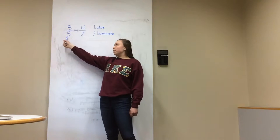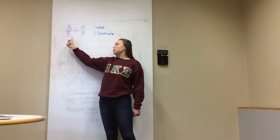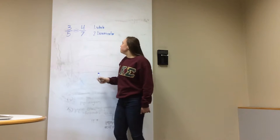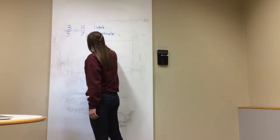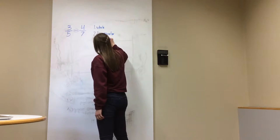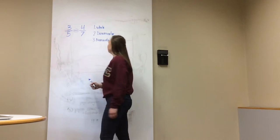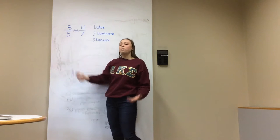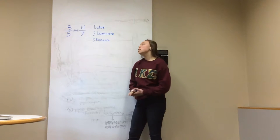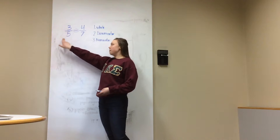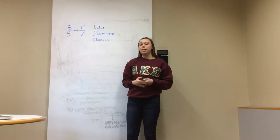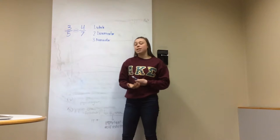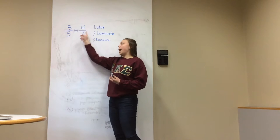So if we have 3 fifths of an apple, that apple is divided into 5 pieces. If we have 4 sevenths of an apple, the apple is divided into 7 pieces. Next we look at the numerator. What the numerator tells us is how many of the pieces that our whole was split into that we have, or that we're considering. So if we have 3 fifths of an apple, we only have 3 out of the 5 pieces that make up the whole apple. In the 4 sevenths, we only have 4 of the 7 pieces that are breaking up that apple.